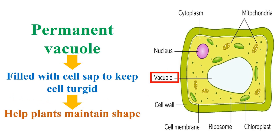Permanent vacuole is filled with cell sap to keep the plant cell turgid and help the plant to maintain its shape.